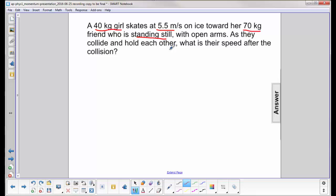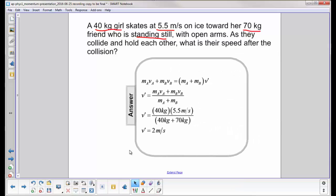Once they collide and hold on to each other, what is their speed after the collision? Well, this is a perfect inelastic collision because you have two objects in the beginning, then one at the end, and we're solving for V prime, the final velocity.